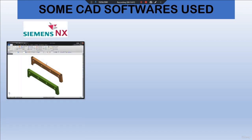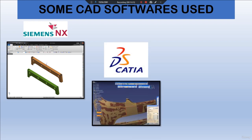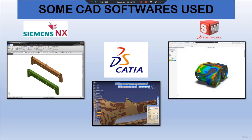The first software is Siemens NX, which is also the software this course is based on. It can perform solid, surface, auto surface, and hybrid modeling. The next is CATIA, another powerful engineering tool that can be used to reverse engineer an object. The third is SolidWorks, which has a module called 'Mesh to Surface' that can auto-surface scan data.